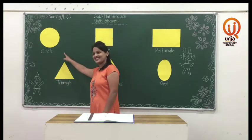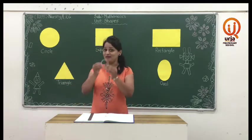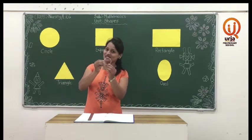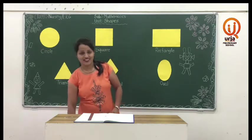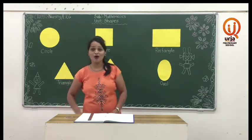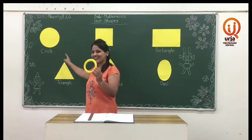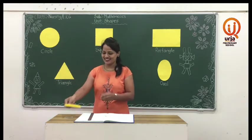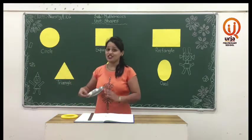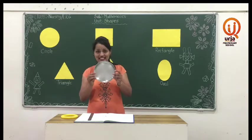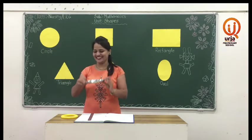First, circle. The shape of the bangle looks like a circle. The shape of the ring looks like a circle. The shape of the bridge looks like a circle.